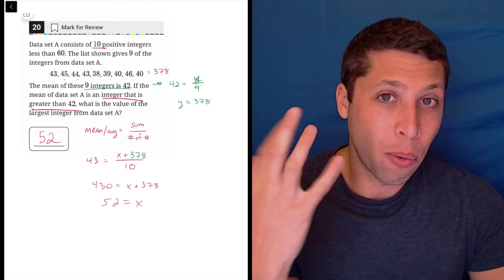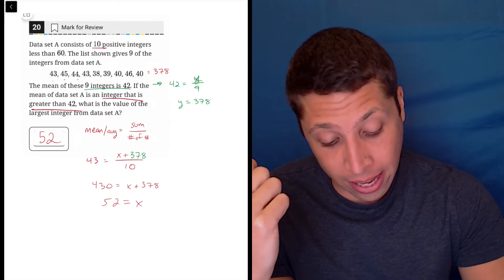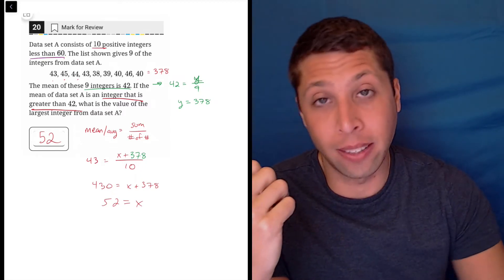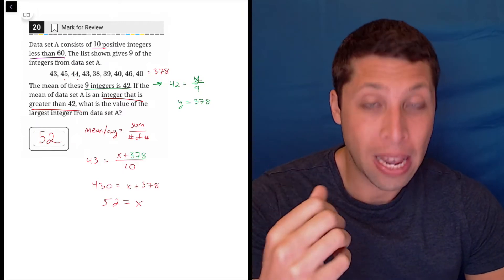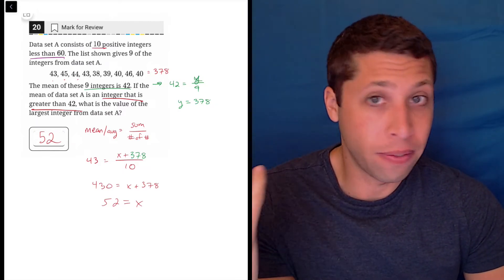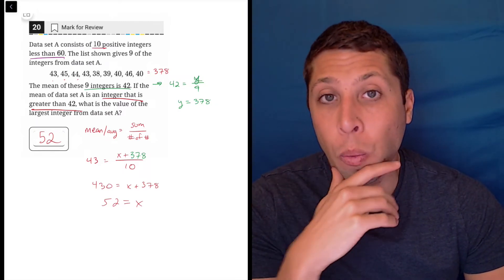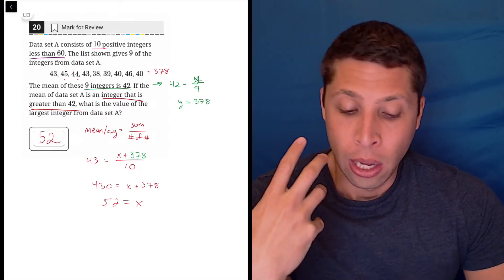Now, you might be thinking, well, what's to say it can't be higher? They give us a limit. They say it has to be less than 60, so why wouldn't it be able to be 53, 55, 59? What prevents that?